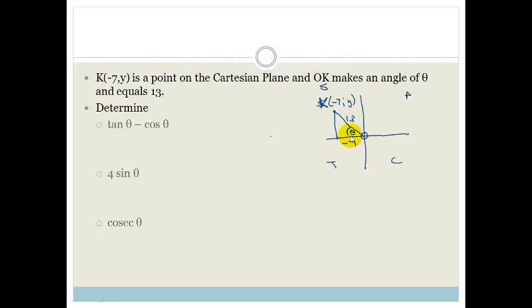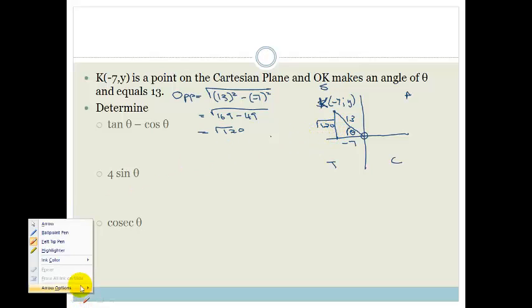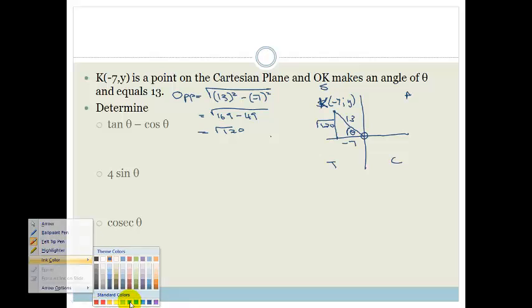So we can use Pythagoras to work out this side here, the opposite side. So we can say that the opposite side is equal to the square root of 13² minus 7². So it's the square root of 169 minus 49, which equals the square root of 120. So therefore this length here is the square root of 120. Now I'm going to change to different colors so we can see what I'm doing.